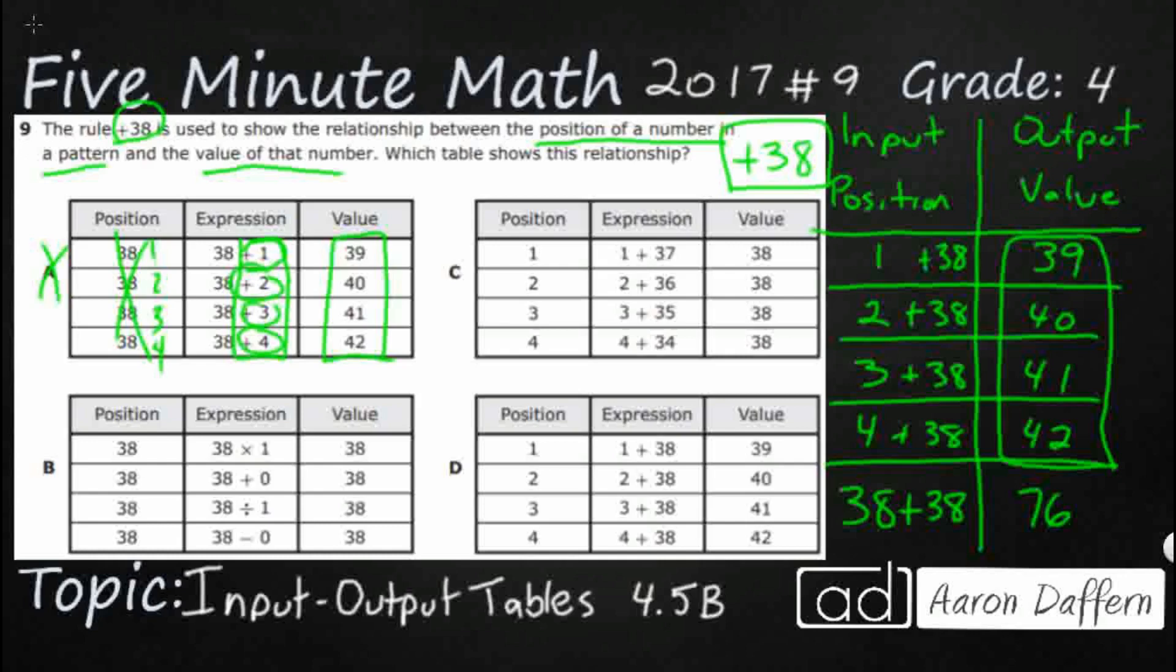B, not sure what B is doing over here because nothing is happening. The positions should be 1, 2, 3, 4. But look at what they're doing. They're changing the rules again every single time, which is not what we do. But nothing happens. They multiply by 1, get 38. They add 0, they get 38. They divide by 1, get 38. They minus 0. So, nothing happened on B except a whole lot of work.